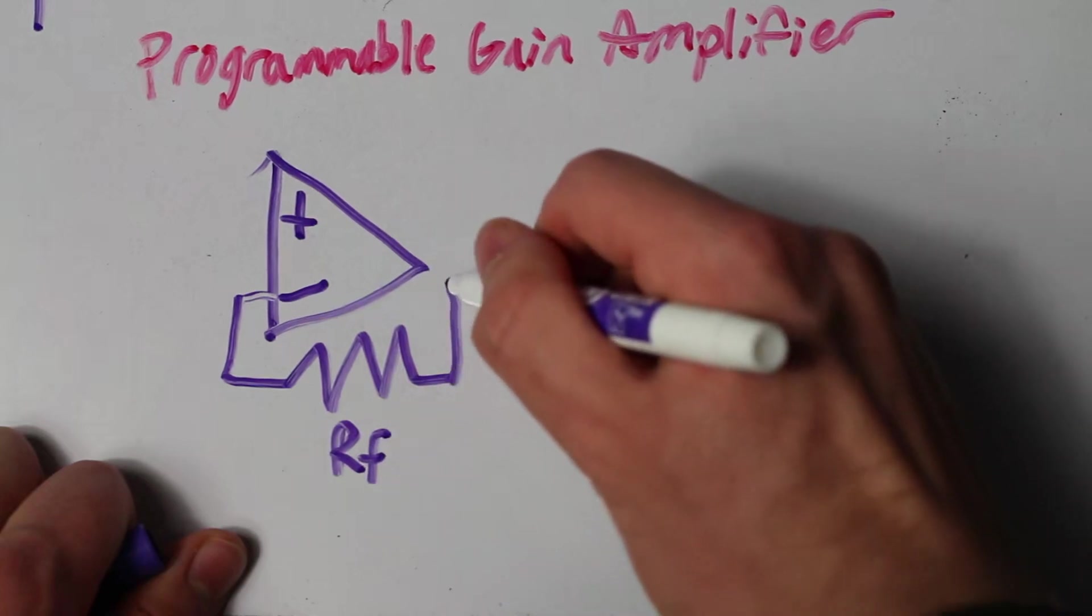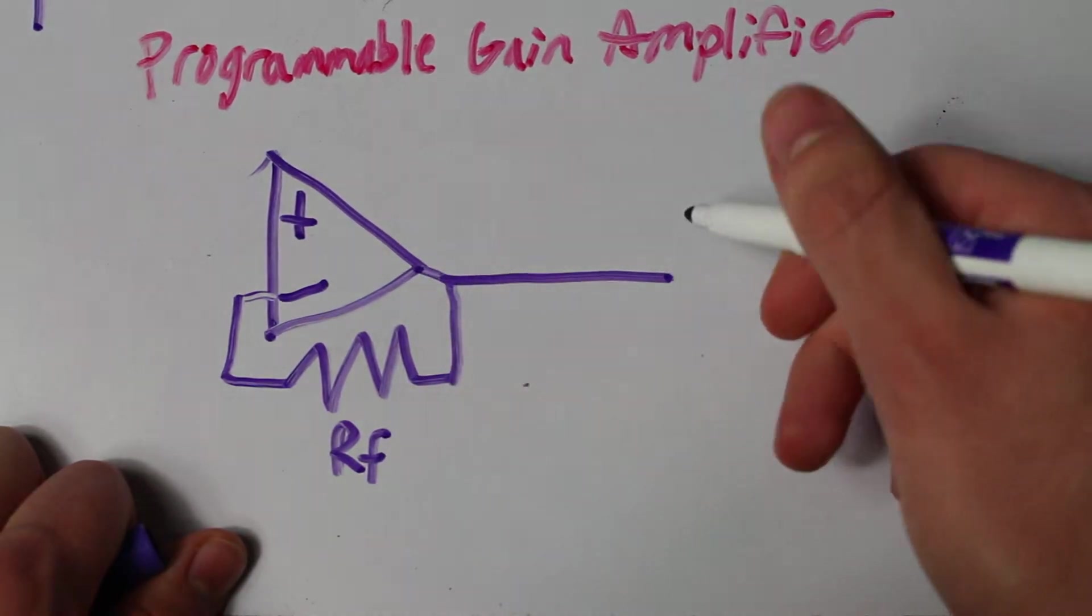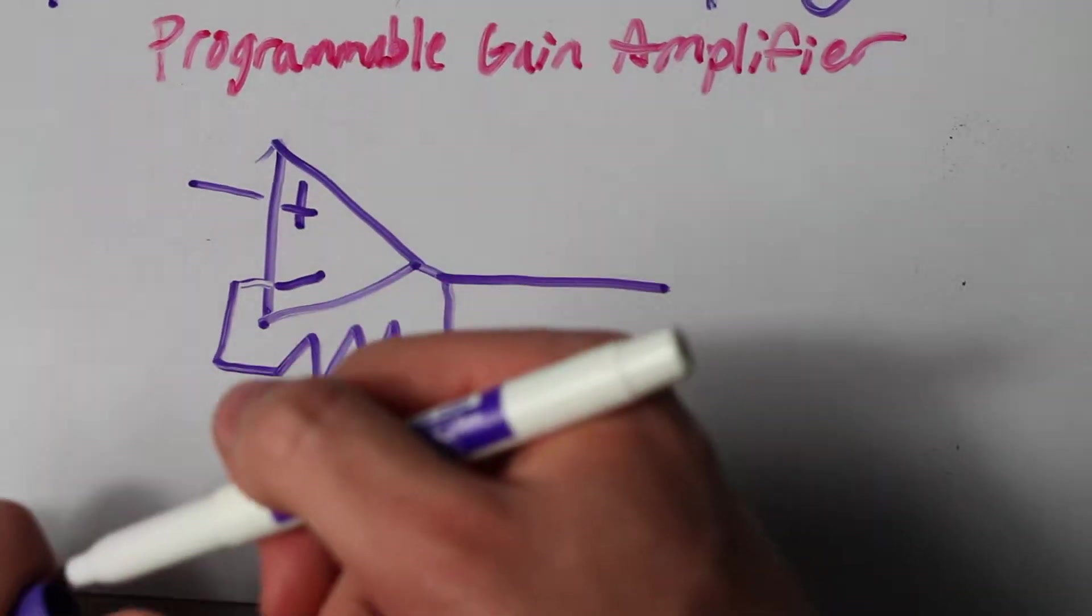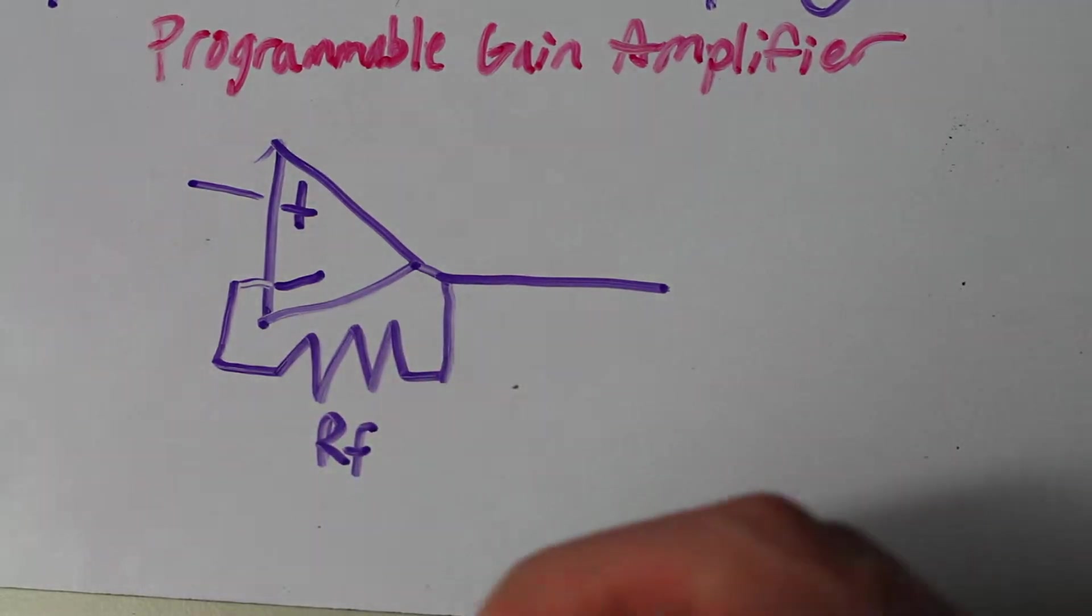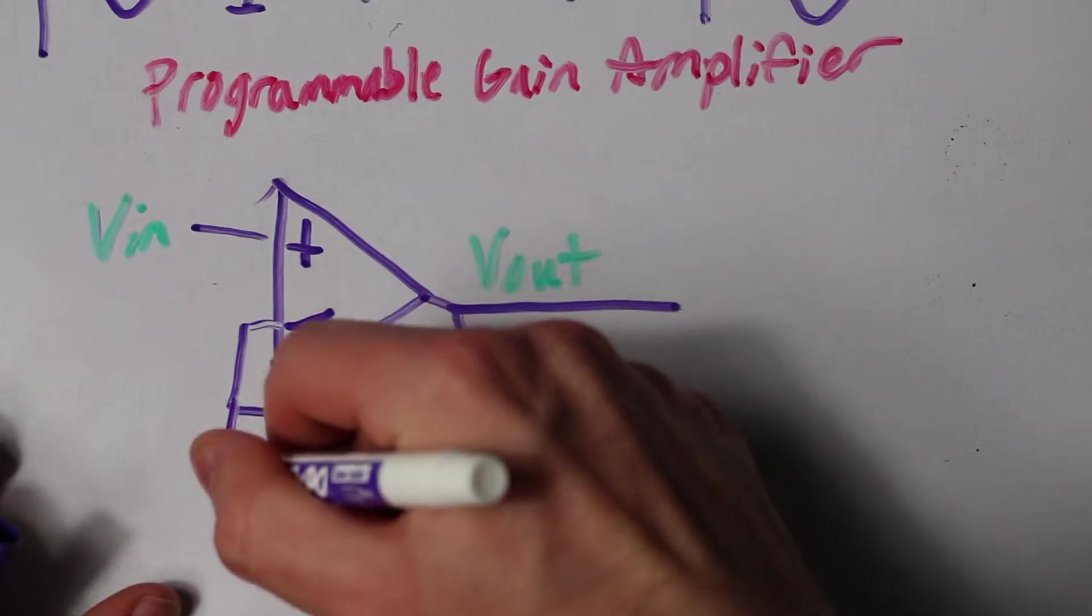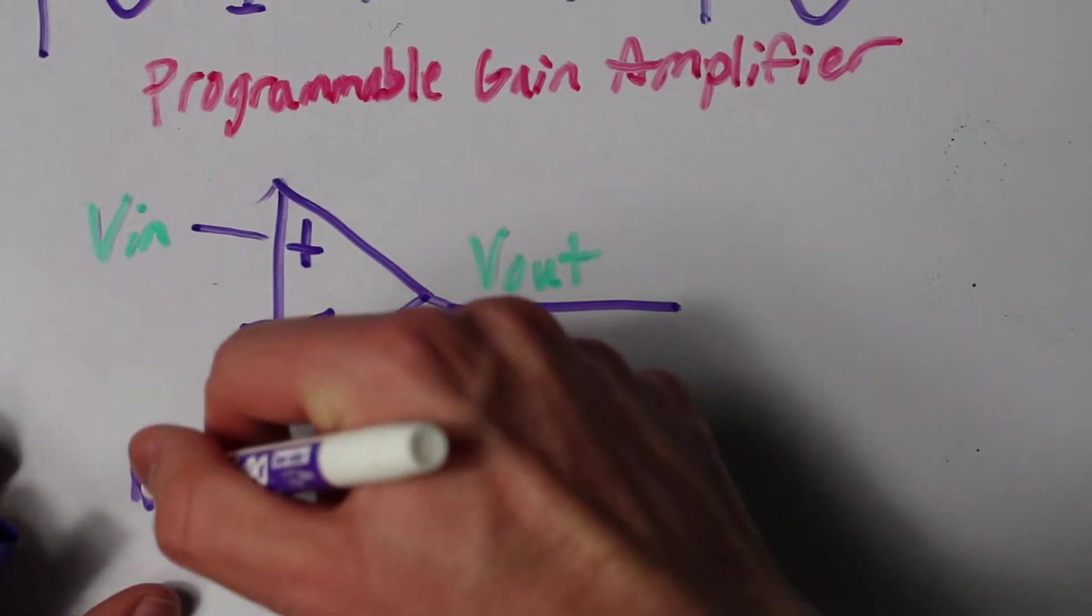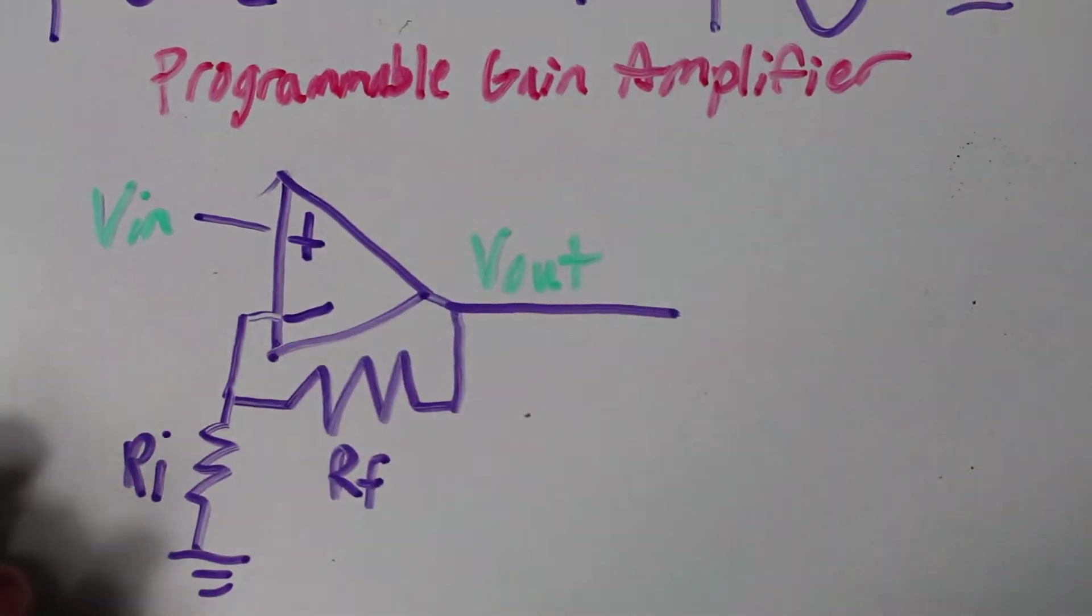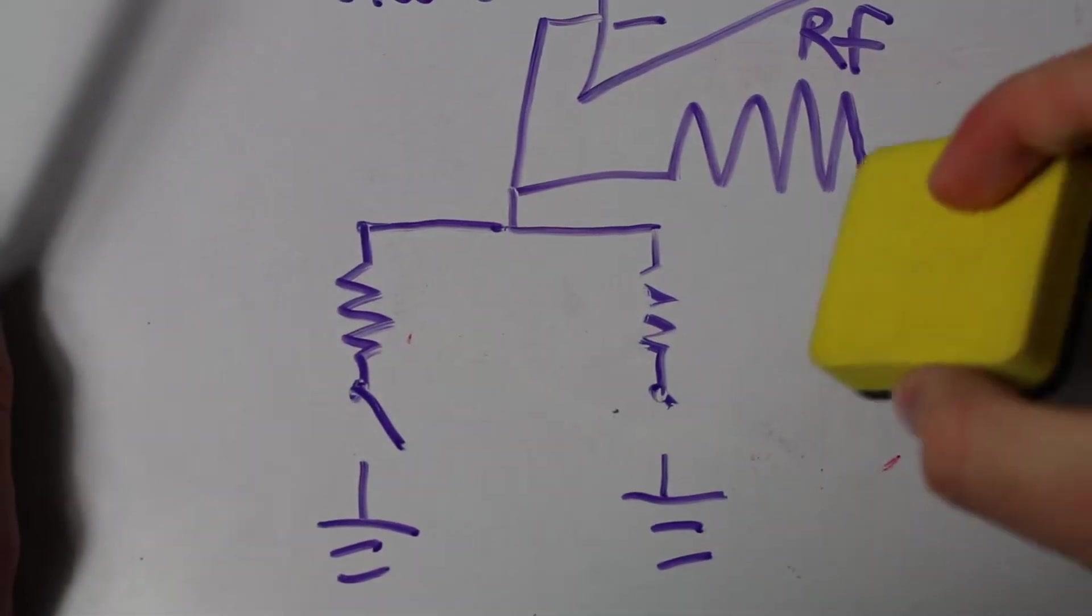To understand how to make one, let's first consider a typical non-inverting amplifier. To increase the gain, we can change the bottom resistor. While this is great, how can we digitally control this? Well, that's where we can add switches. Basically, we can select from a variety of switches to select the bottom resistor.